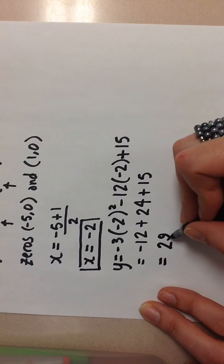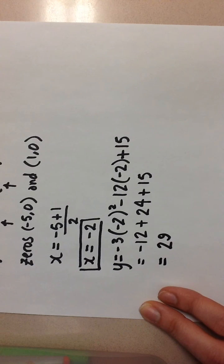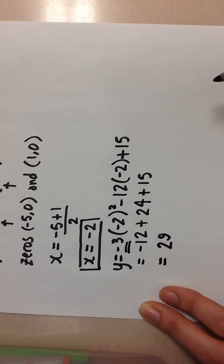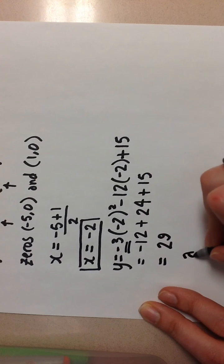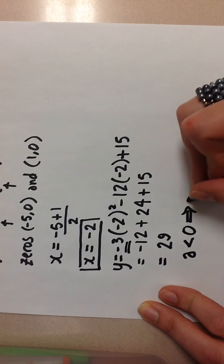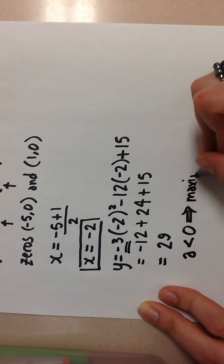This y value is going to be a maximum because we see here that the a value is negative for my quadratic, meaning that the vertex is a maximum.